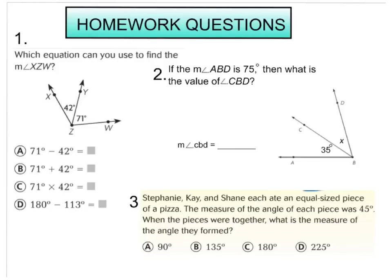Okay, friends. So here are our homework questions. There are three questions. The first one says, which equation can you use to find the measurement of angle XZW? So you need to look for XZW. Which one of these equations would you use to figure out that angle measurement? Would it be 71 degrees minus 42 degrees? Would it be 71 degrees plus 42 degrees? 71 degrees times 42 degrees? Or 180 degrees minus 113 degrees? Next, question number two says, if the measure of angle ABD is 75 degrees, so if this angle right here is 75 degrees total, then what is the value of angle CBD? What is this missing value right here? If we know that this total amount is 75 degrees, and we already have 35 degrees to show us, what would be my unknown value for that angle there? Go ahead and work that one out as well.